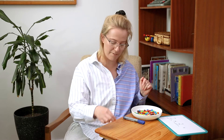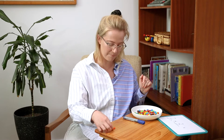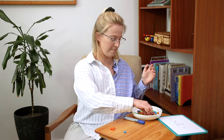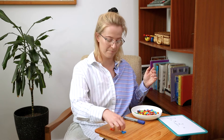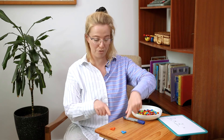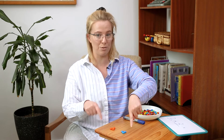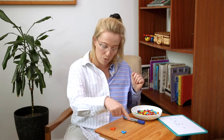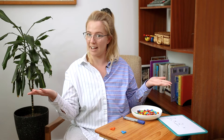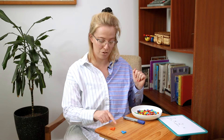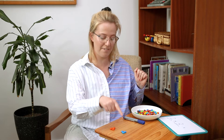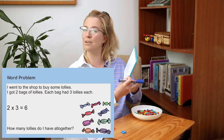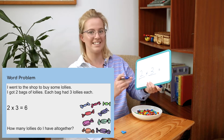I have two groups with three M&Ms in each group. Now I can add all of it together to find out the answer. One, two, three, four, five, six. So two groups of three, or two times three, equals six.